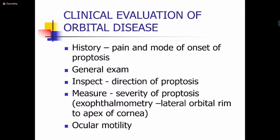Then you go on and measure the proptosis. The most important thing is to establish the severity of the proptosis. Measurement is important because as you're treating the patient, the progression of the proptosis will guide you as to whether the patient is responding to treatment or not. Usually we use an exophthalmometer, but you can also use a ruler, measuring from the lateral orbital rim to the apex of the cornea.